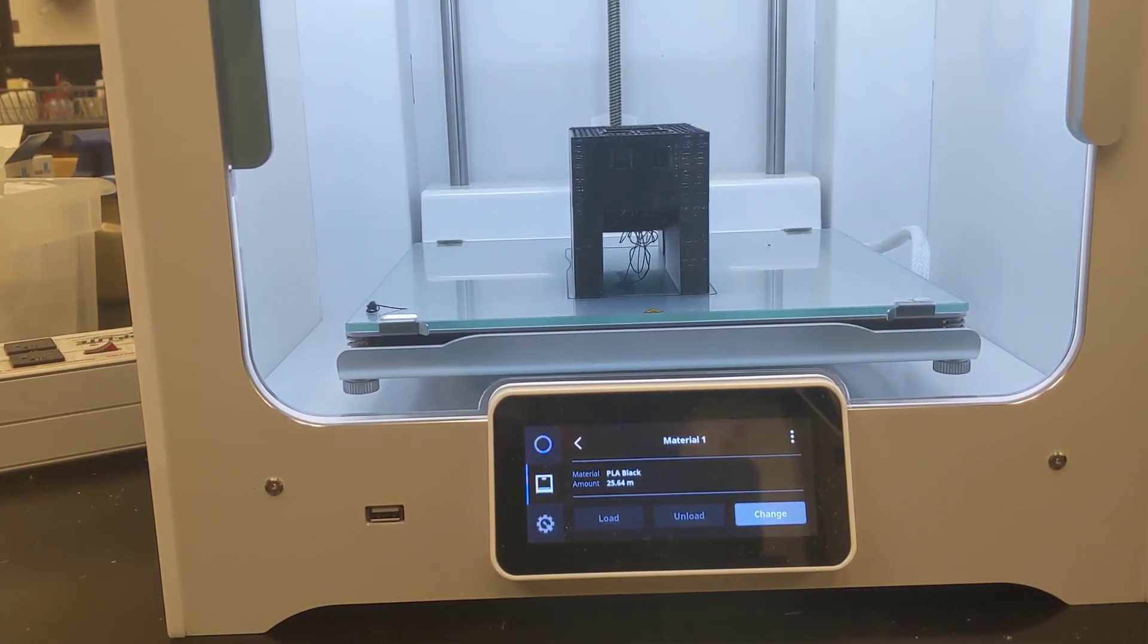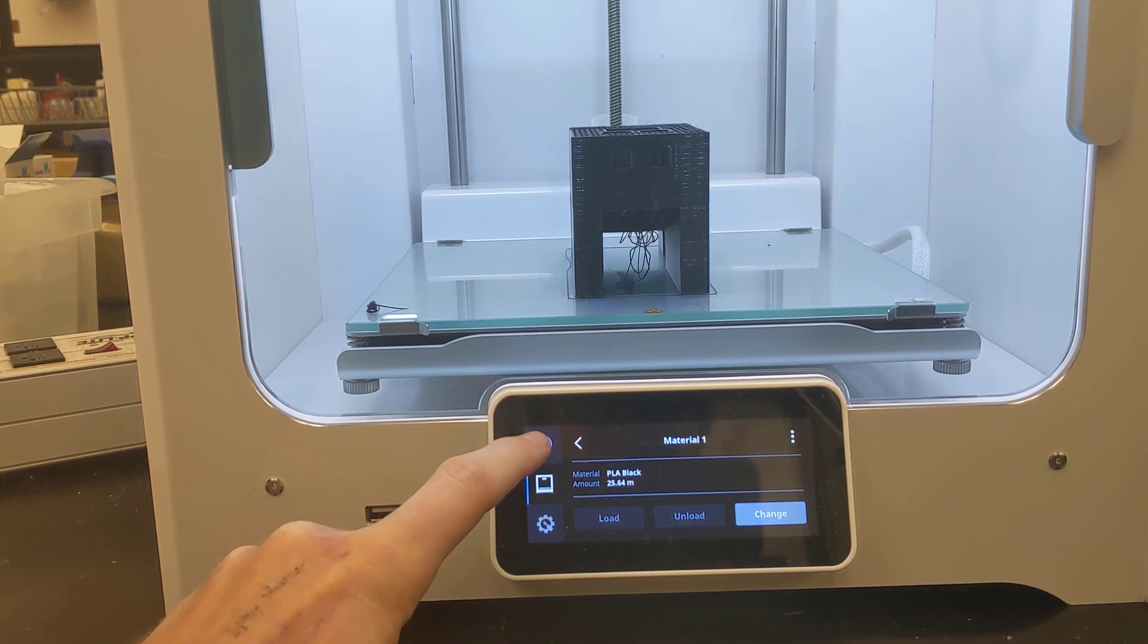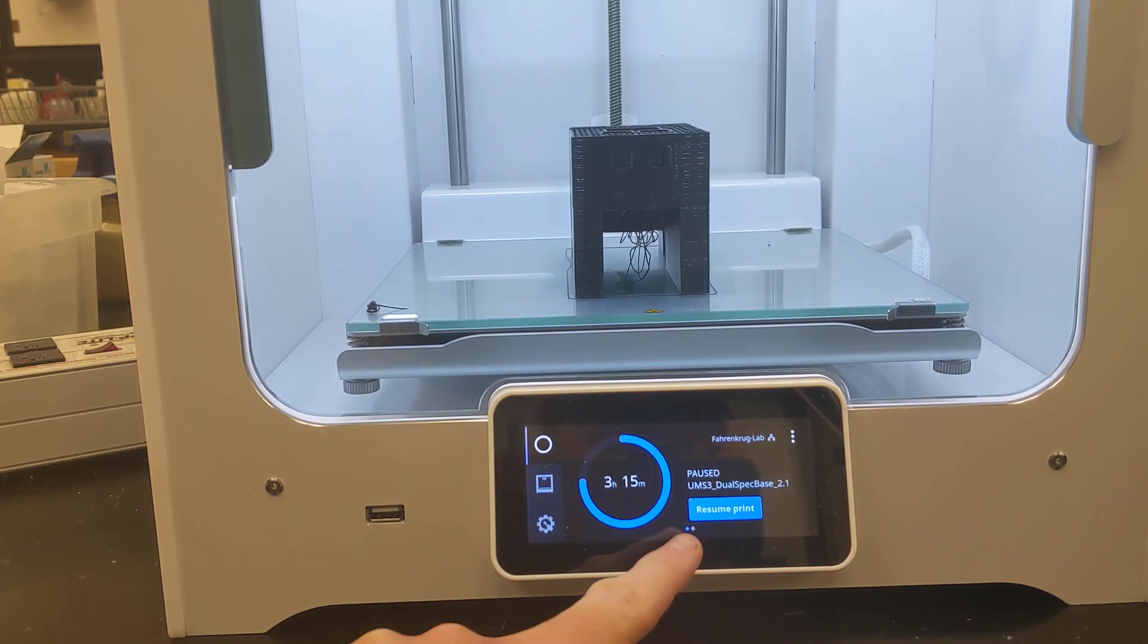Okay, so the last step here then, once you're at this screen, we've already changed out this material. So we need to go back to this top button here, which is actually our active print job. Click that button. And remember now, we still have three hours left on this print job, so I need to click resume print. Now that we changed that out, and it's going to slowly heat up the bed and heat up the printhead back to the original settings for the print job, and then it will re-engage.